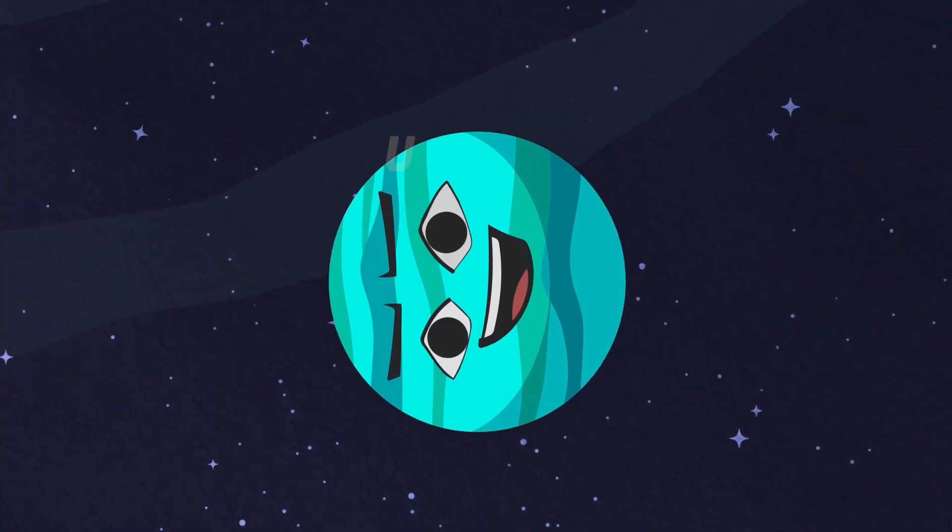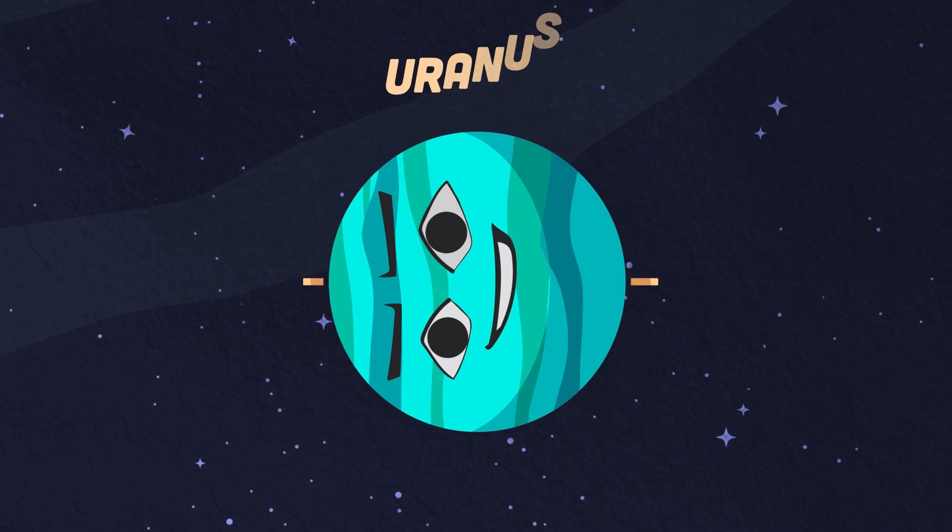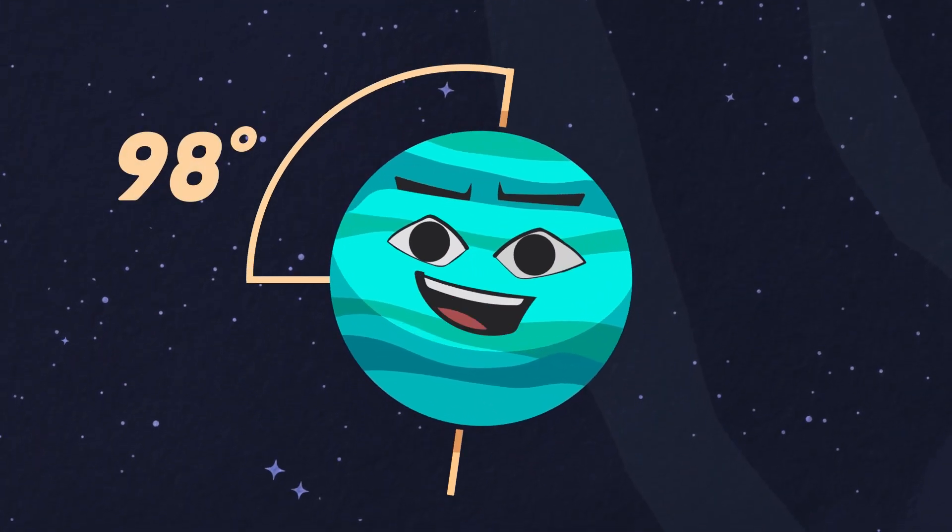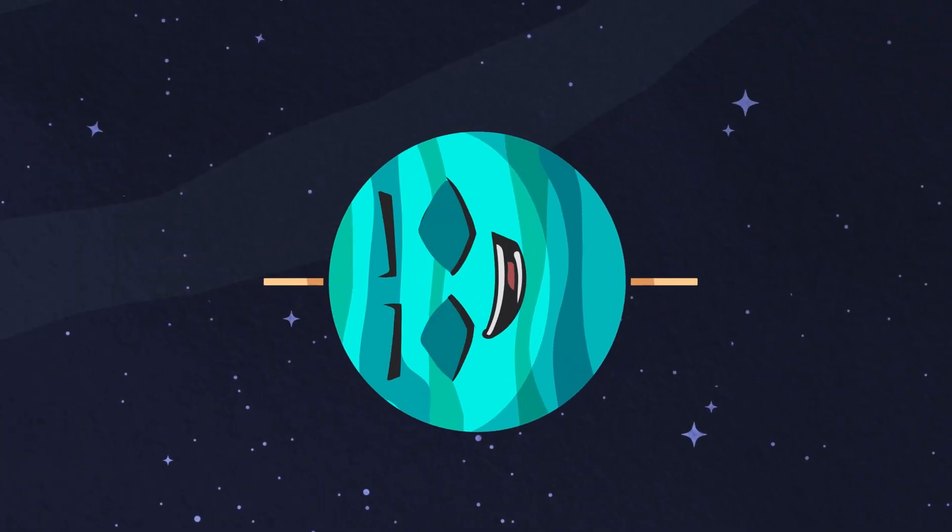I'm Uranus, I have the largest tilt at 98 degrees and all of the solar system. I spin on my side with ease.